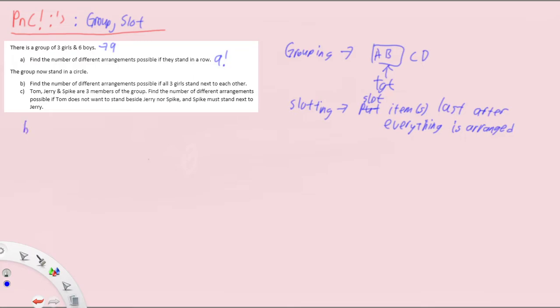For part B, find the number of arrangements if all three girls stand next to each other. Take note that the group now stands in a circle — good habit: circle the word 'circle'. Because the three girls must stand next to each other, we have to group them. So we group the three girls together, with the six boys outside the group.